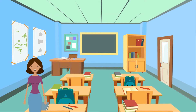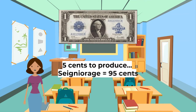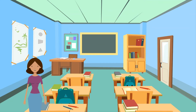Seigniorage may be counted as revenue for a government when the money it creates is worth more than it costs to produce. This revenue is often used by governments to finance portions of their expenditures without having to collect taxes. For example, if it costs the U.S. government 5 cents to produce $1, the seigniorage is 95 cents, or the difference between the two amounts. Seigniorage gives the country the potential to turn a profit when it produces money. While the definition of seigniorage is most often the difference between the cost of printing new currency and the face value of that same currency, it is also the number of goods or services a government can acquire through the printing of new notes.